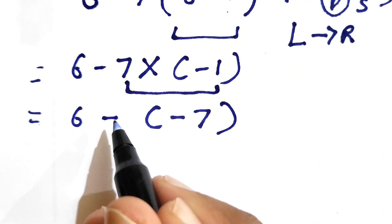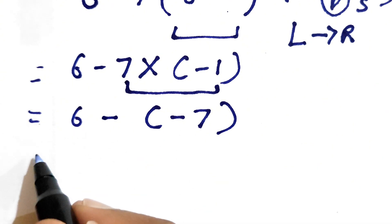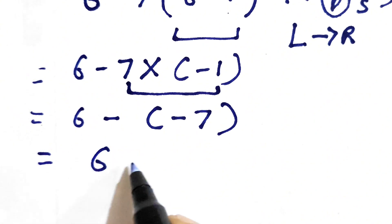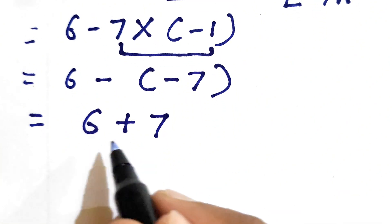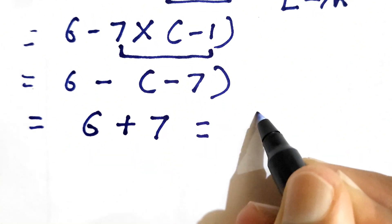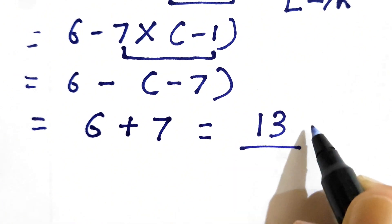So we have 6 minus negative 7, that simply becomes 6 plus 7, and 6 plus 7 gives us 13. So this is the final correct answer.